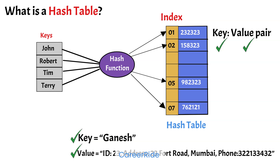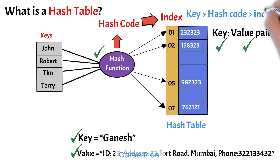Now, how does a hash table store the data? A hash table uses a hash function to do so. A hash function can take a large block of input data or an object and convert it into an output of shorter value of integer type, called the hash value or hash code. The hash function also generates the index where the hash code will be stored in the hash table, and then maps the hash value or hash code to an index into the hash table. Basically, the hash function converts the key into a hash code and then maps it to an index into the hash table.